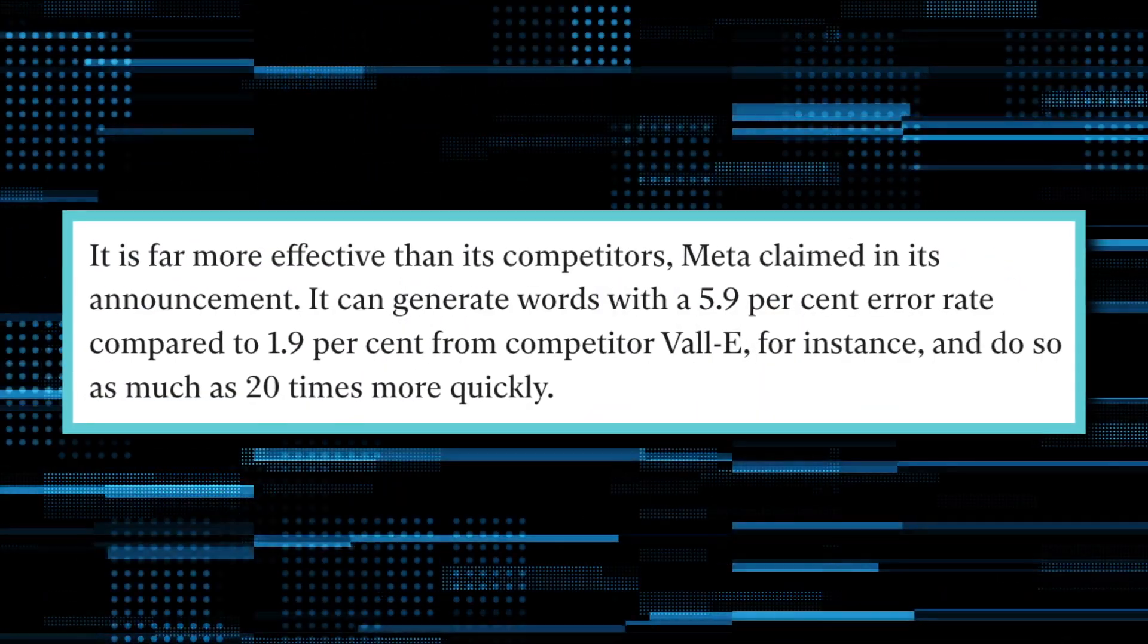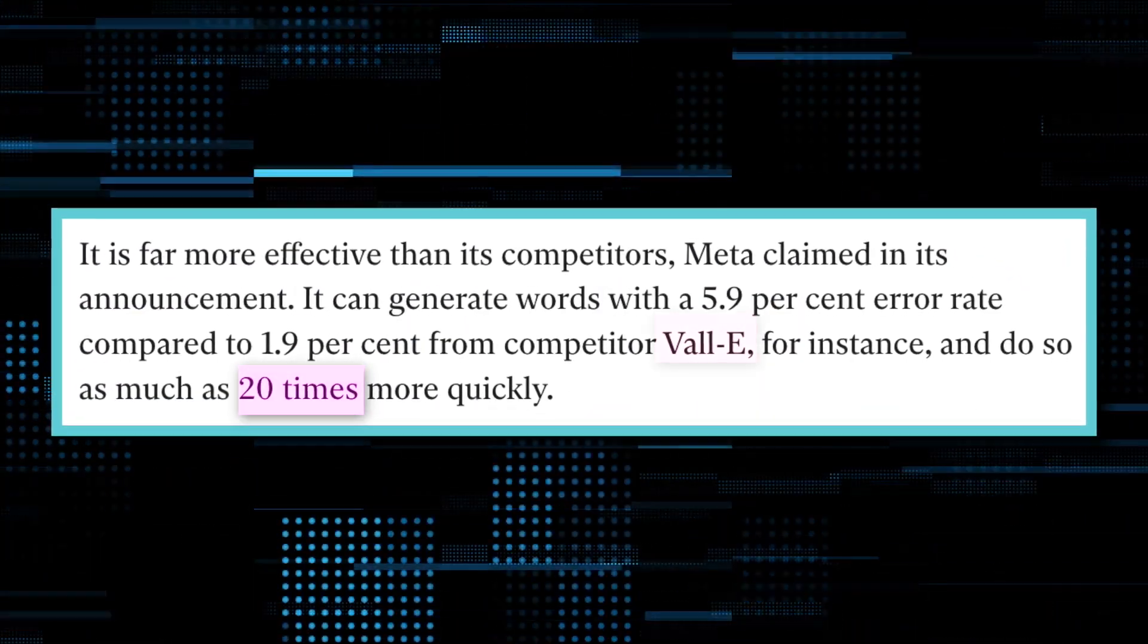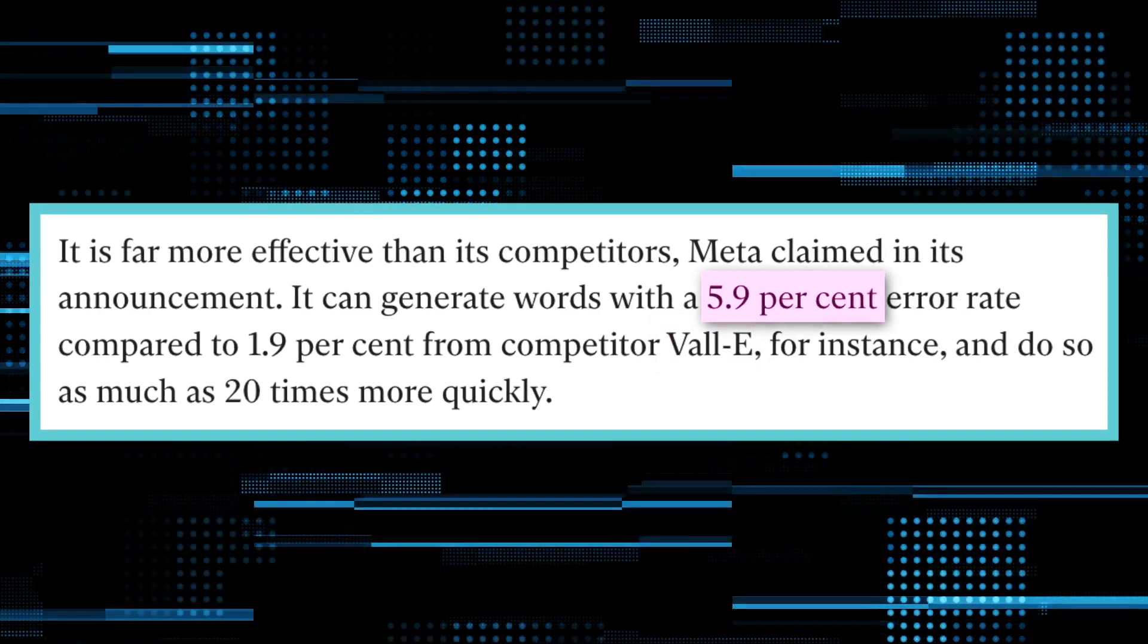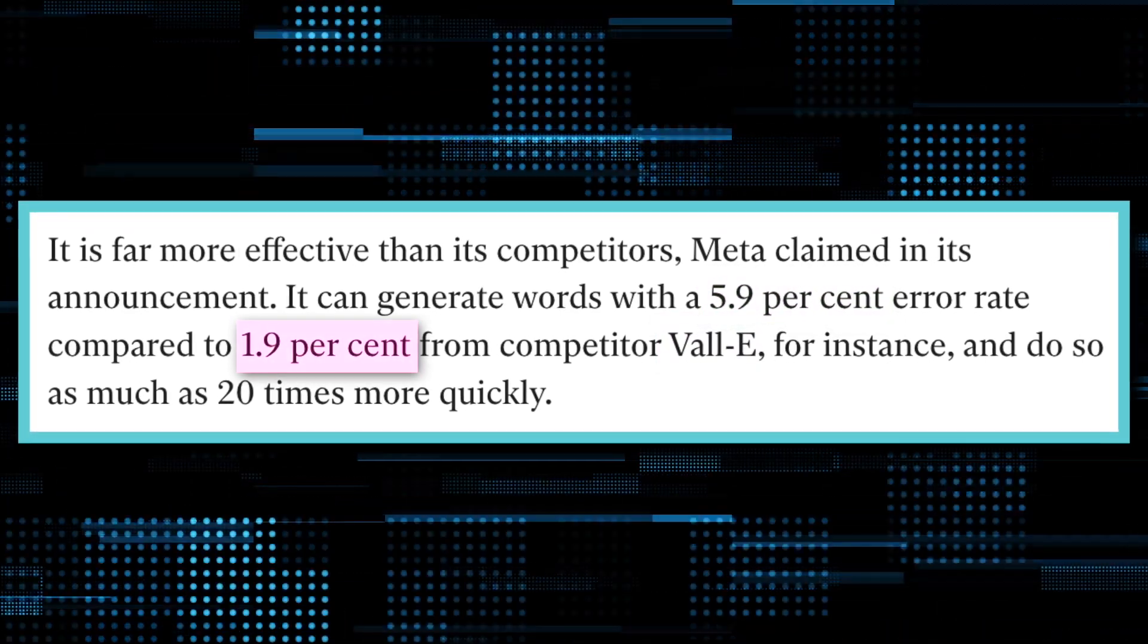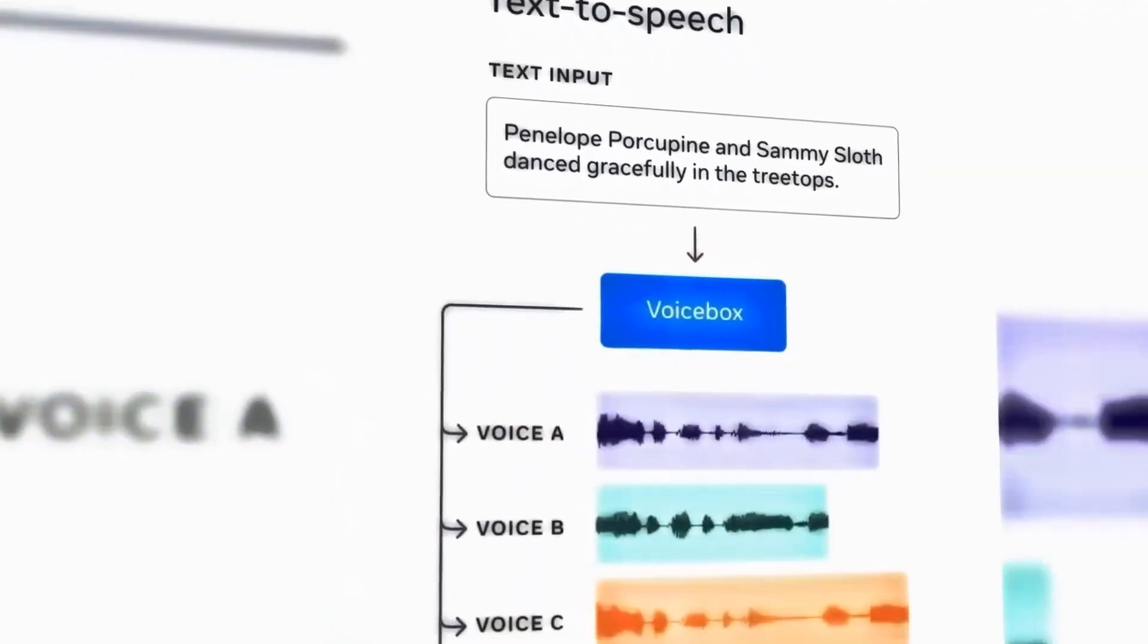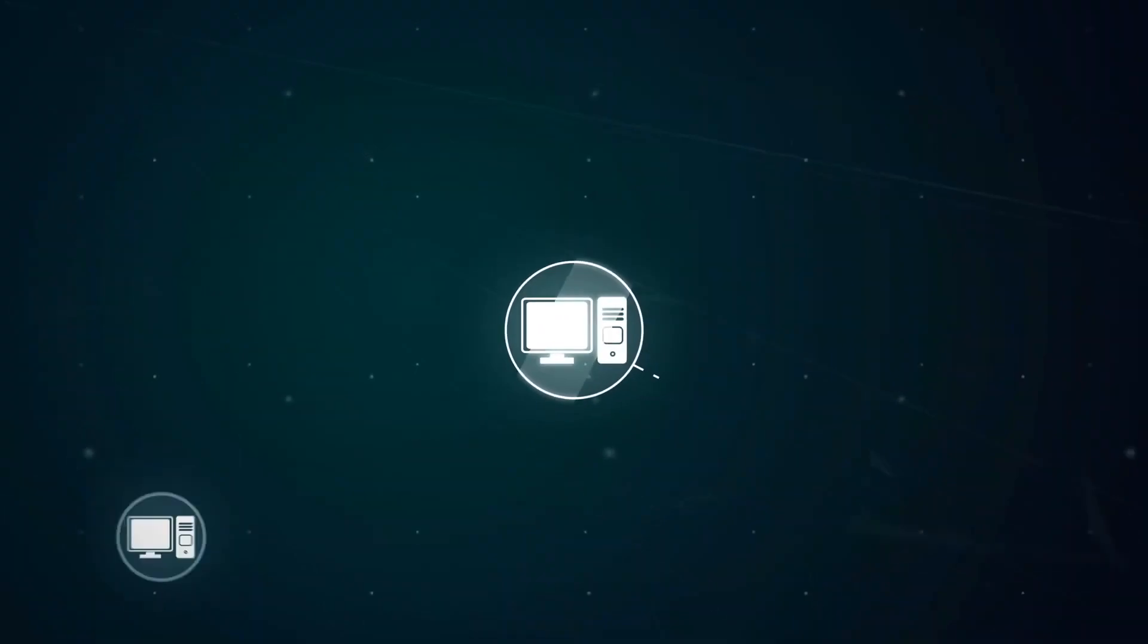It can produce words up to 20 times faster than competitor Vollee and with an error rate of 5.9% as opposed to Vollee's 1.9%. According to Meta, it was created using a new model it dubbed flow matching as its base.